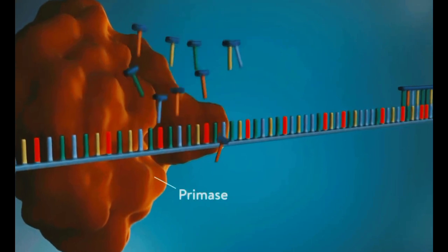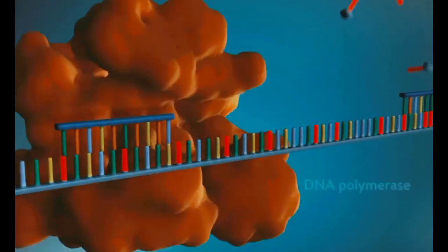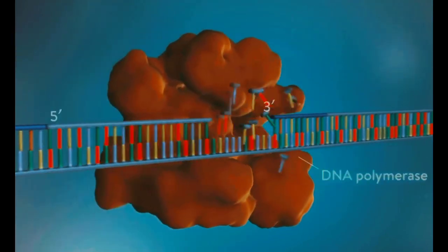The next primer is then added further down the lagging strand. Another Okazaki fragment is then made, and the process is repeated again.